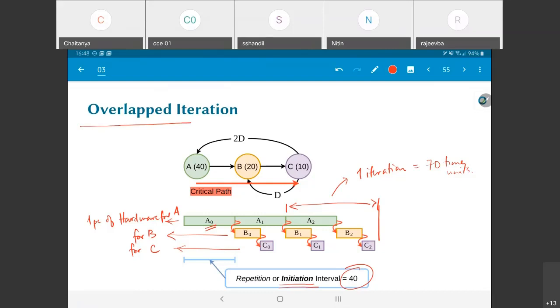And what I have shown over here is an example of something called overlapped iteration, where basically what I end up with is there are actually two iterations happening at the same time. That is to say, the A1 over here and the B0 over here are both happening in parallel with each other.